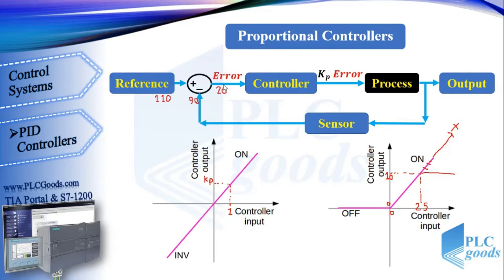Now let's see why the error can't be zero. Assume it is zero — the output of the controller will be zero and the filling valve will be closed. This state decreases the liquid level because the discharging valve is open, so the reference value and liquid level won't be equal. This means the steady-state error cannot be zero. This is the proportional controller's weakness, and therefore industrial processes use PI controllers.